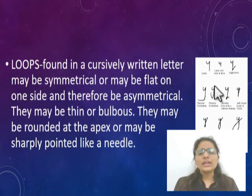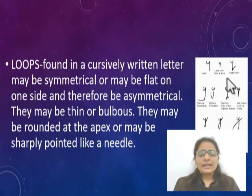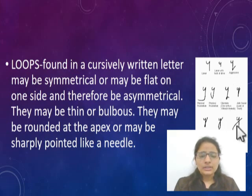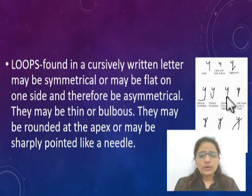Next is loops. Loops found in cursively written letters may be symmetrical or may be flat on one side and therefore asymmetrical. The way of forming a loop is different for different individuals and can help in examination. Here, one loop is formed properly; in another, the loop is shrunken; in another, little or no loop is formed; and in another, a straight way of writing is done instead.